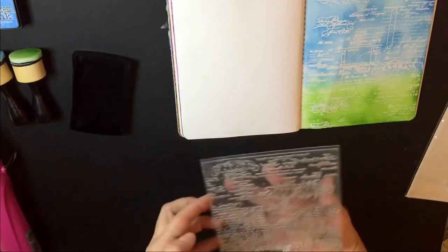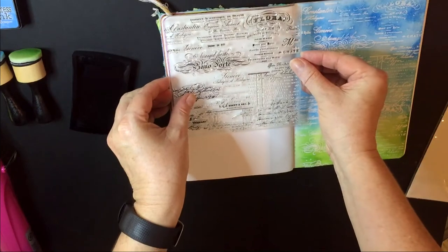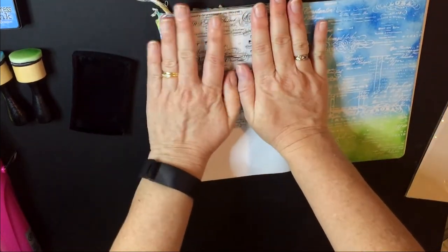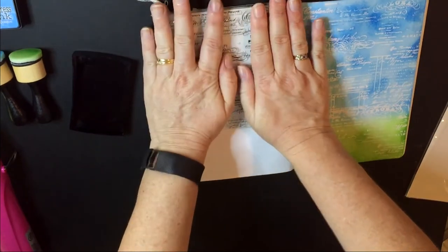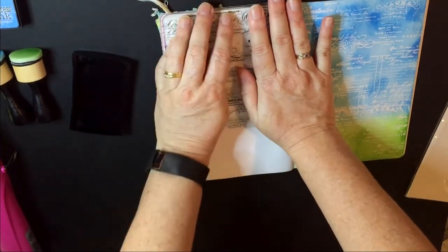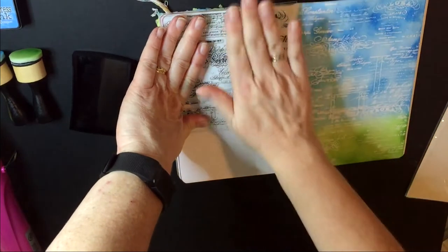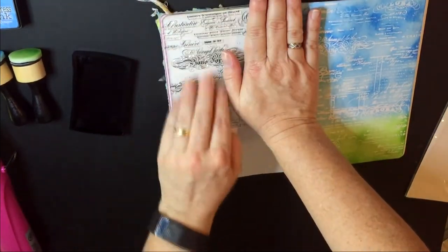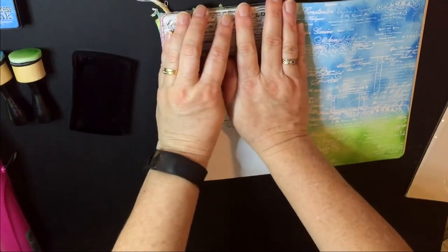Then I'll grab my journal and I'm going to stick that straight onto my page like so. Now I'm going to press down on that so all the Versamark gets down on the page where I want it.